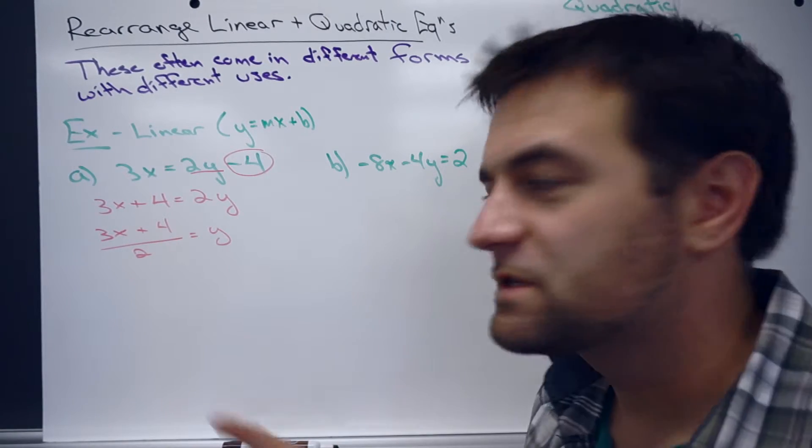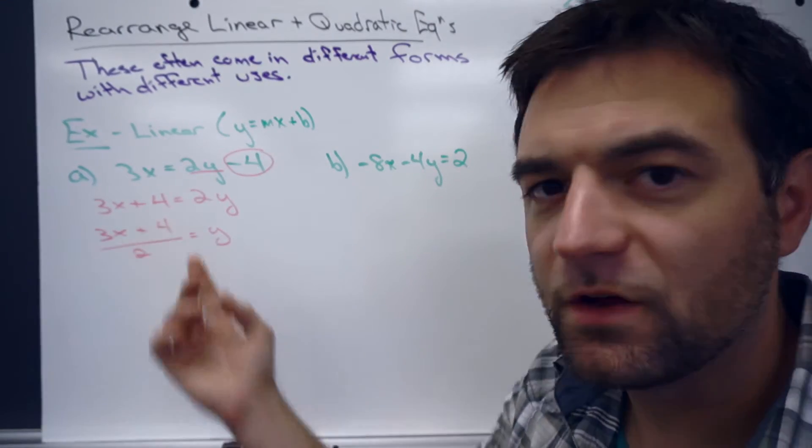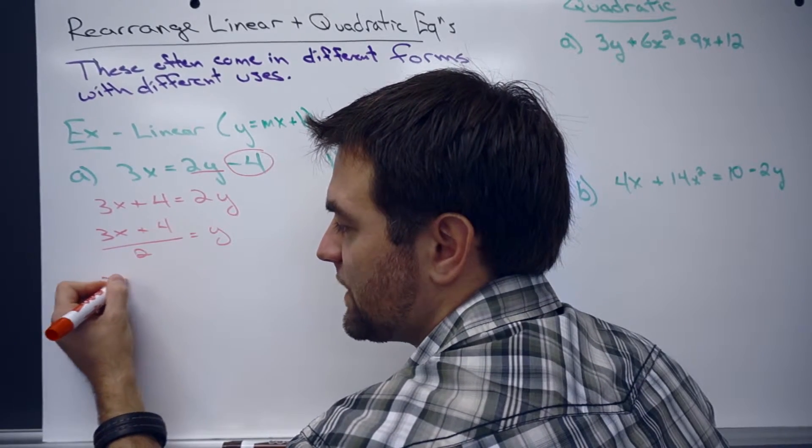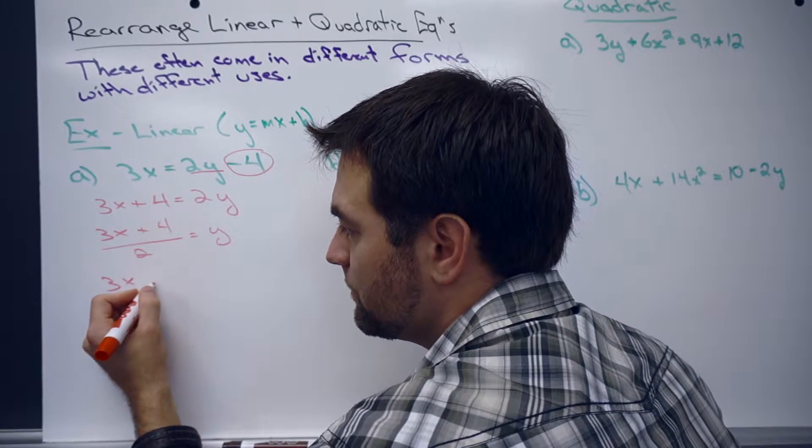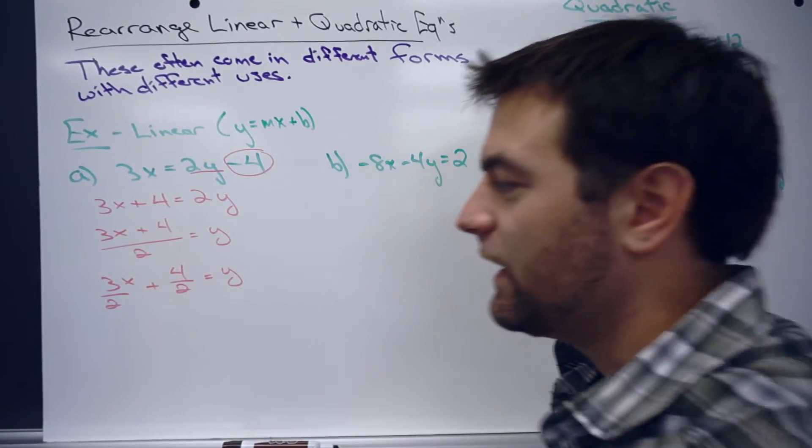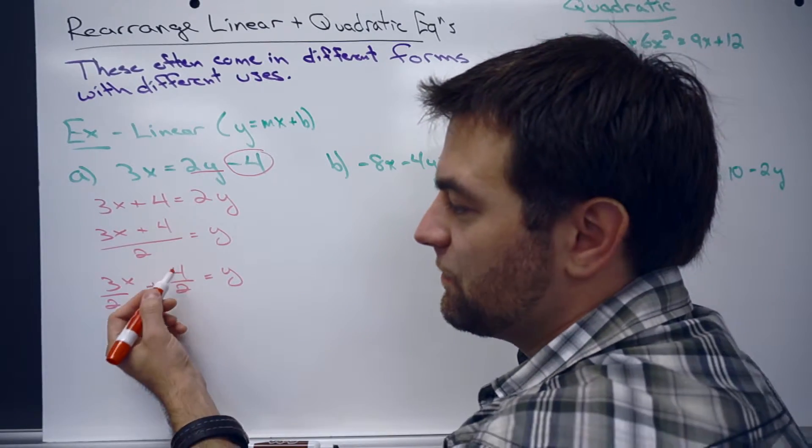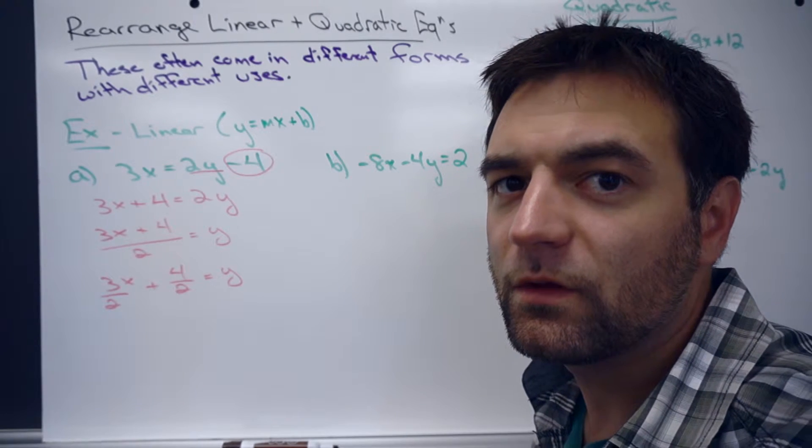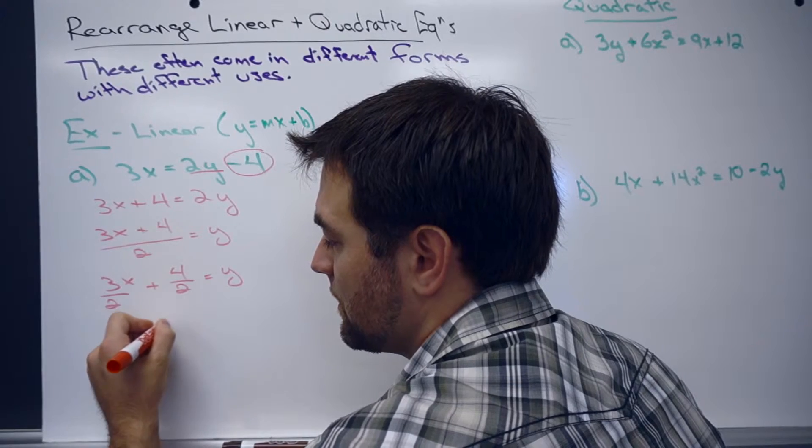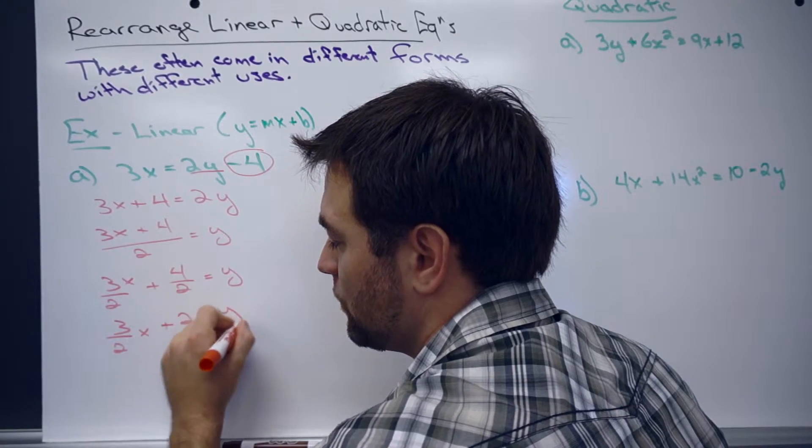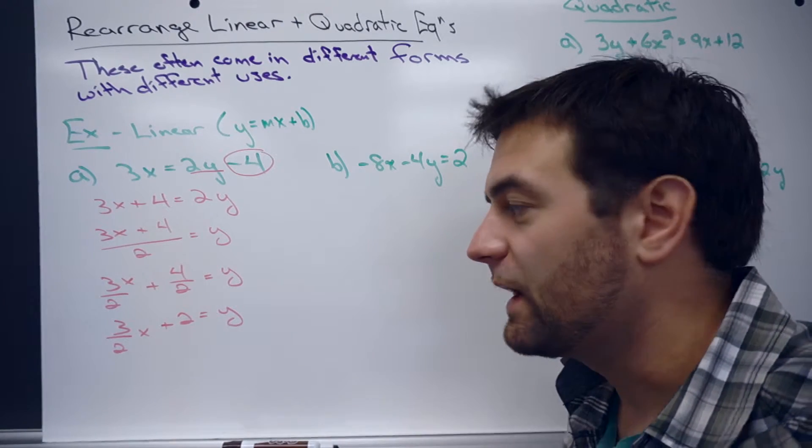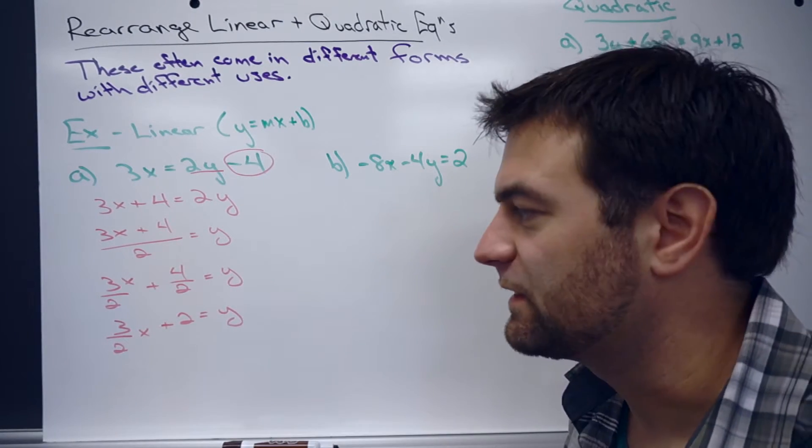Now, in most cases, this here can be often broken up and simplified down. So we can write this the other way, which is 3x over 2 plus 4 over 2 equals y. And this will give us something a little more useful because 4 divided by 2 is 2. And so we have 3 over 2x plus 2 equals y. This here is a little simpler of an equation. It might help us out a little bit when we go to use this for graphing or something like that.